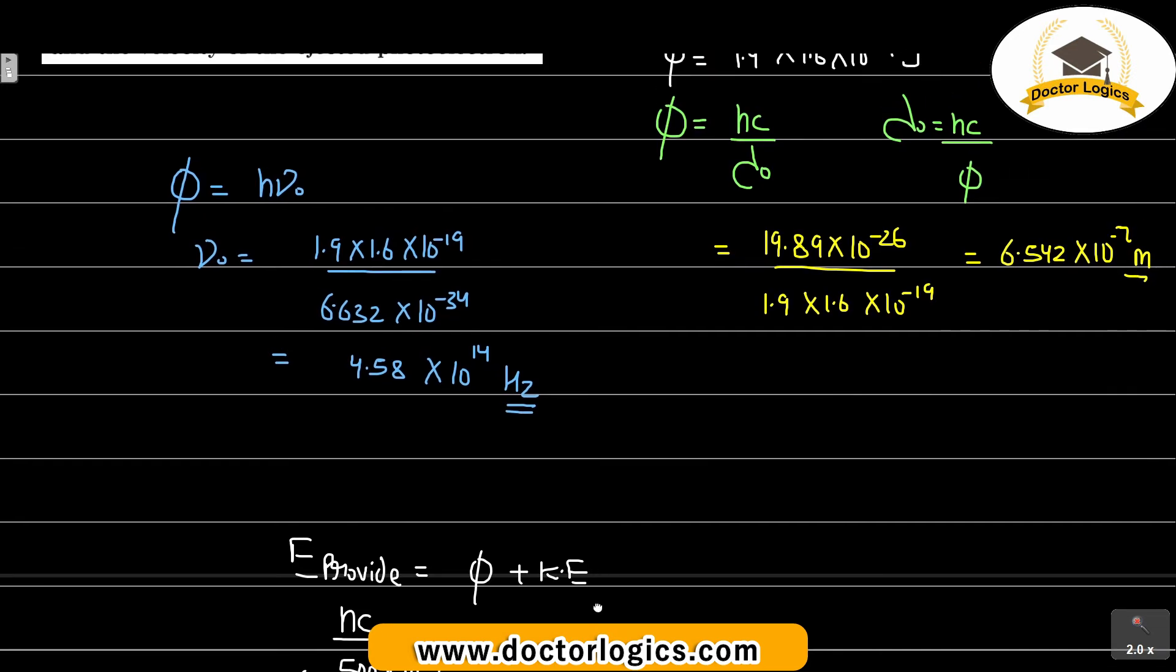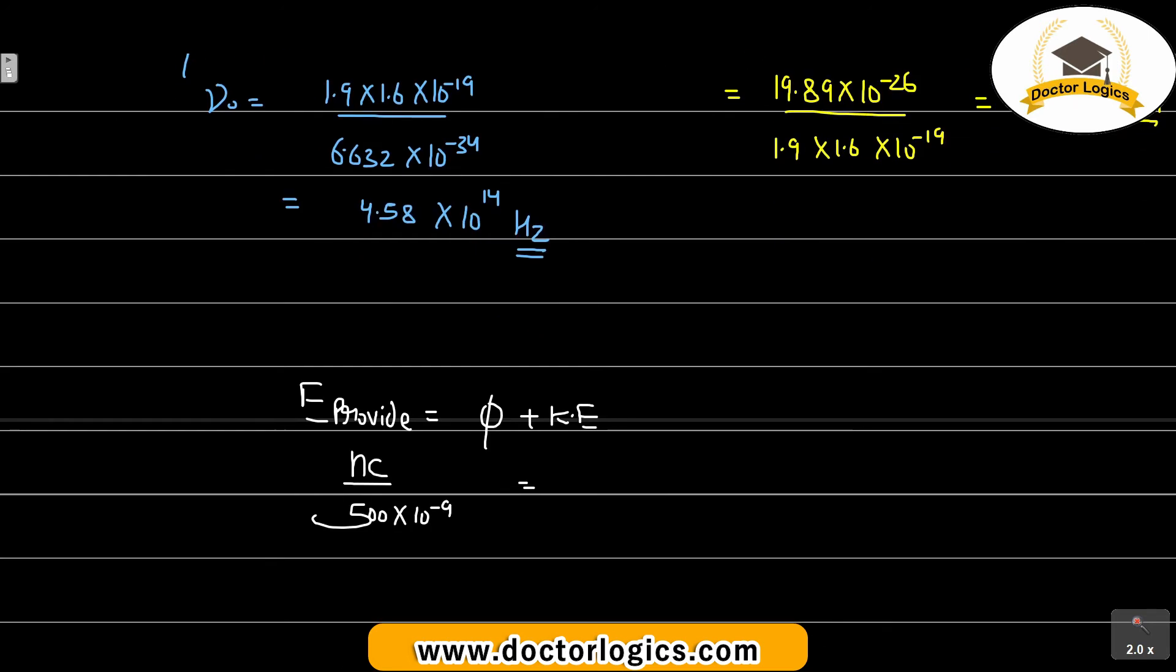And work function provided was 1.9 electron volts, which is 1.9 into 1.6 into 10 to minus 19, plus kinetic energy.